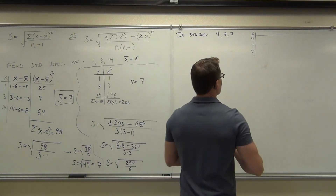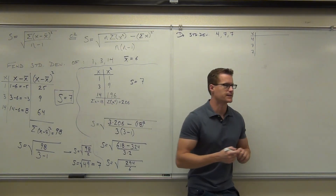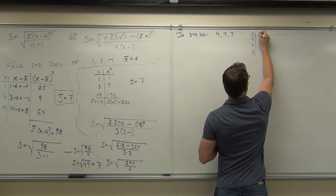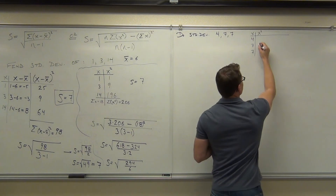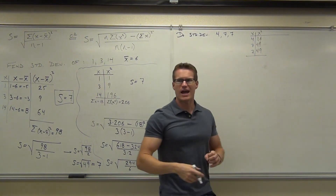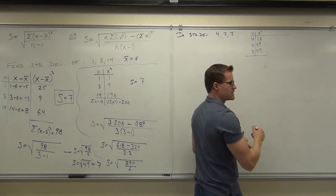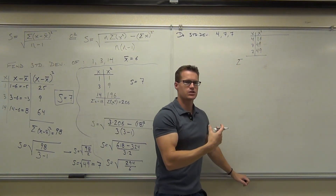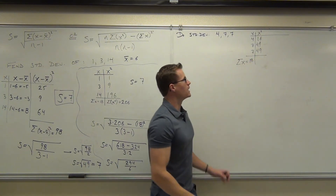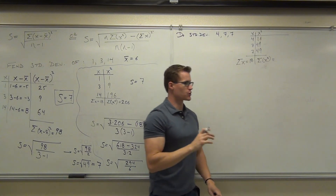So if I'm doing this the second way, what's the first thing I need to do? Do I need to find the mean if I'm doing the second way? No. So squaring them, I know I'm going to get 16, 49, 49. The next thing you do is add both those columns because you're going to be using both those sums in your formula. So if I add these together, I'm still going to get 18. This is the sum of x — this is not the sum of x-squared. When we add the x-squared, that's that one — that's the first one you're going to use in your formula.